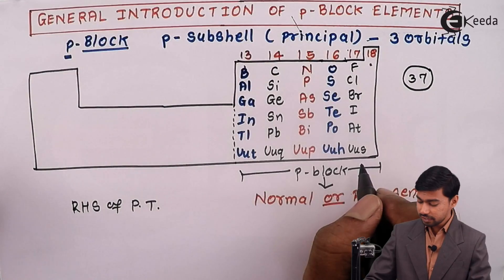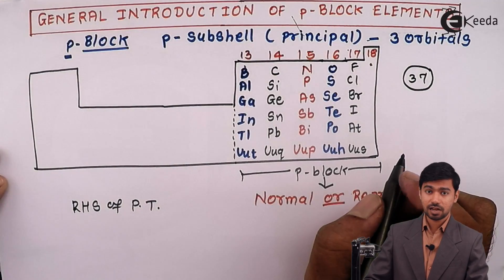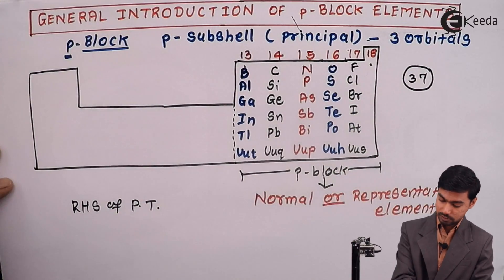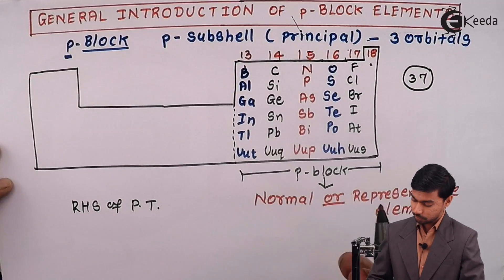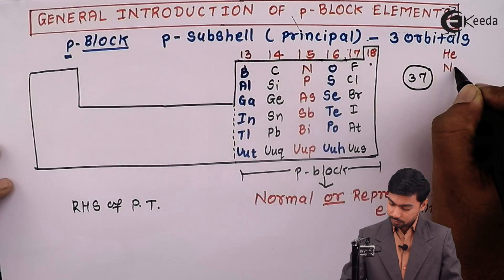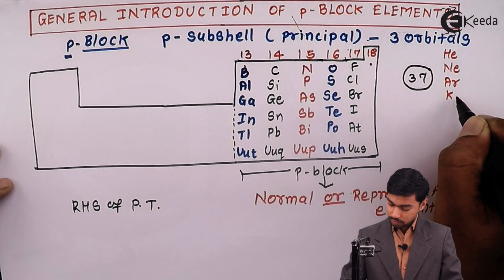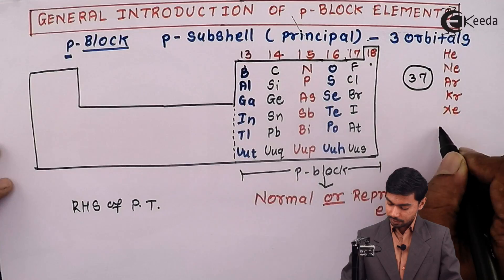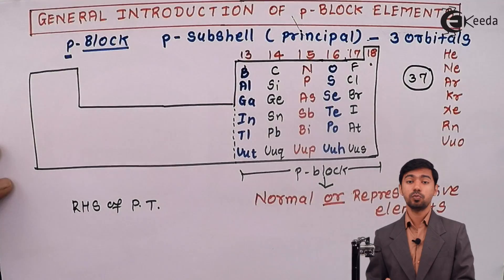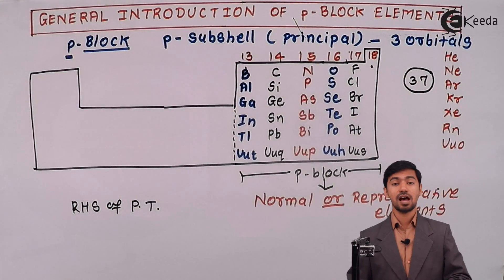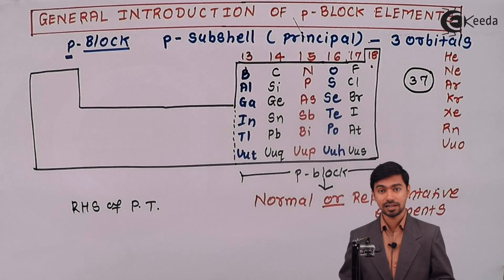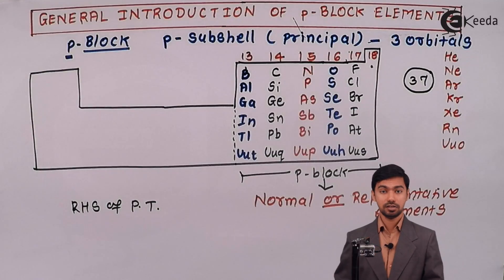Group 17 starts with Fluorine, so it is called the Fluorine family. In case of group 18, there are seven elements: Helium, Neon, Argon, Krypton, Xenon, Radon, and Ununoctium. These seven elements are the zero group elements — the inert gases — which are present in group number 18.